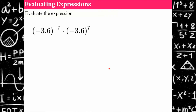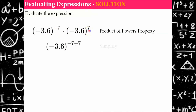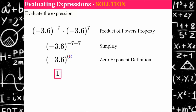Let's try a couple. We're going to employ the power of a product property — if you're not familiar with that, I have a previous video you should check out. When we have the same base and we're multiplying, we add the exponents. So I get negative seven plus seven, which simplifies to zero, and any non-zero base with an exponent of zero is equivalent to one, by the zero exponent definition.